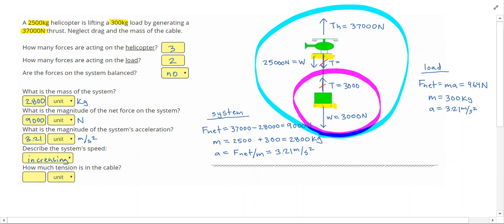It would be 3,000 Newtons to balance it, but we need more force acting upwards than downwards. So plus 964 equals 3964 Newtons, as my tension in the cable.